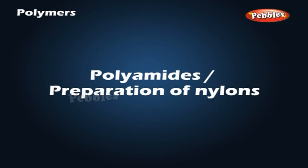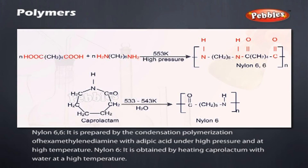Polyamides — Preparation of nylons. Nylon 6,6: It is prepared by the condensation polymerization of hexamethylenediamine with adipic acid under high pressure and at high temperature. Nylon 6: It is obtained by heating caprolactam with water at a high temperature.